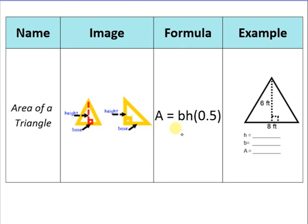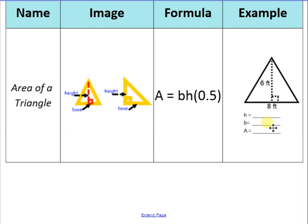Your formula for a triangle is: area equals base times height times 0.5. Go ahead and draw the example. Once you have that drawn — remember you can pause the video to catch up — let's label our height. The height of this triangle from top to bottom is 6 feet, and the base of the triangle is 8 feet.